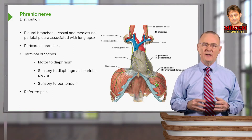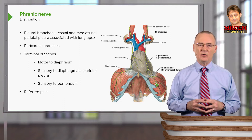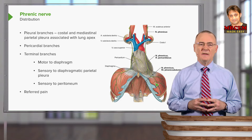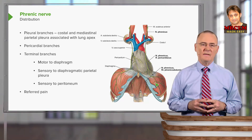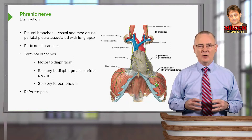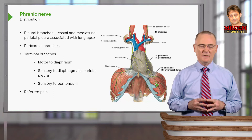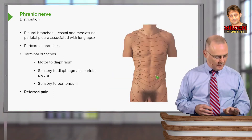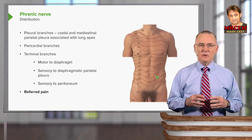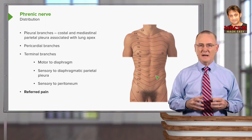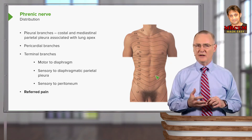There are also sensory fibers in the terminal branches — sensory to the diaphragmatic parietal pleura — as well as sensory fibers that innervate the parietal peritoneum on the inferior surface of the diaphragm. Our next slide will help us understand referred pain. To understand referred pain, we need to understand the dermatomes innervated by C3, C4, and C5.